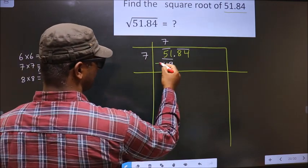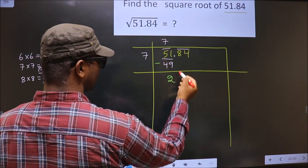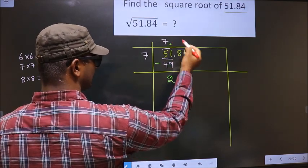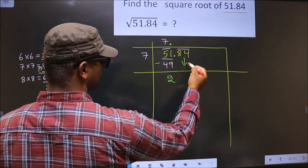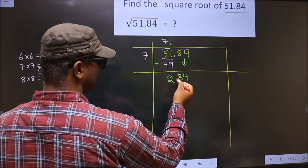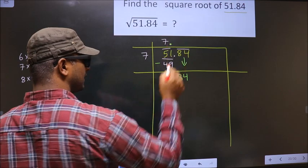Now you should subtract. 51 minus 49 is 2. See, here we have the decimal. It will be shifting here. And this pair will come down, making it 284. Here you should not put decimal again. This decimal we kept it here. That's it.